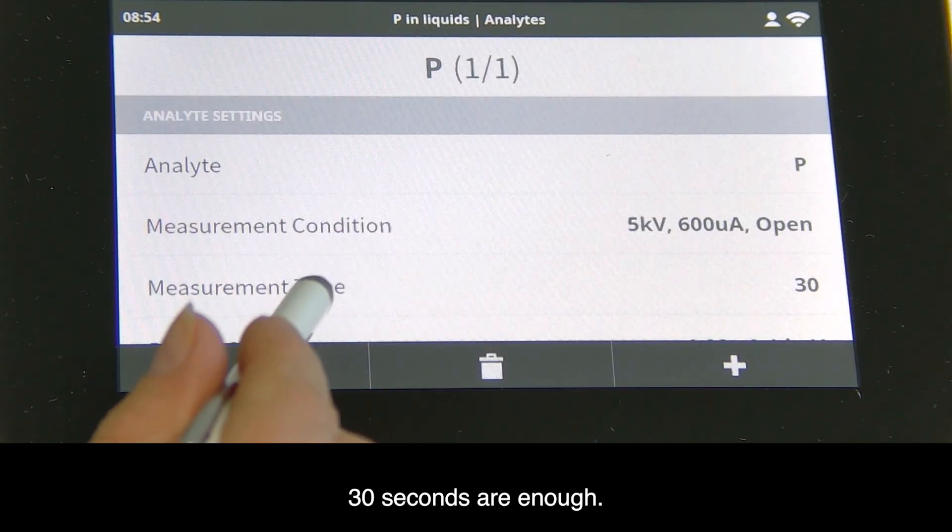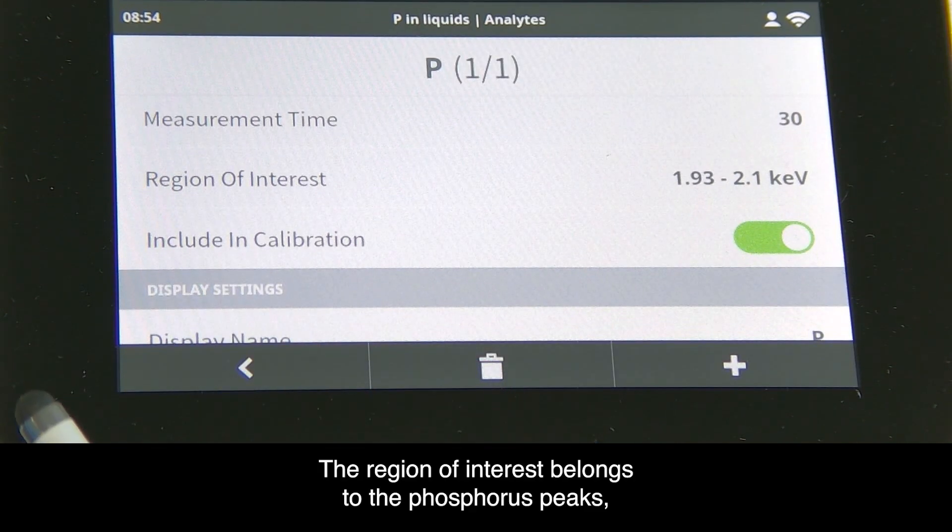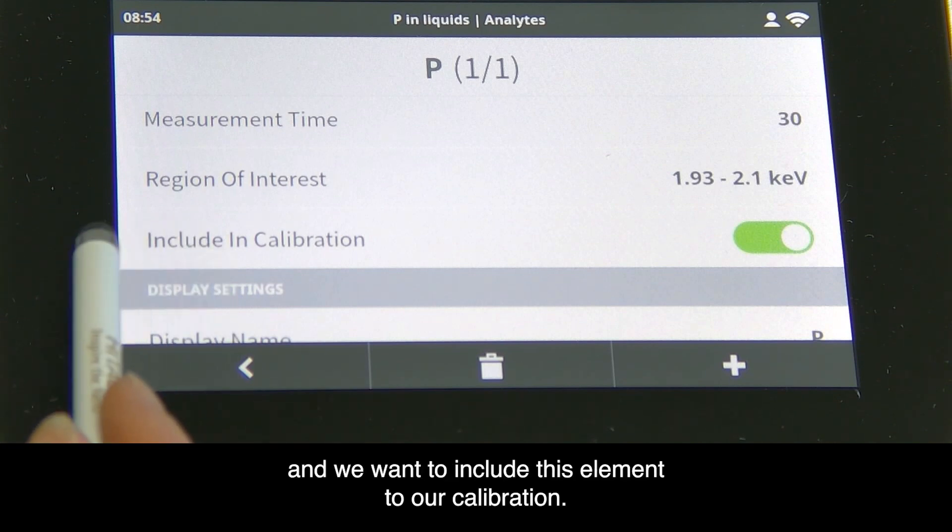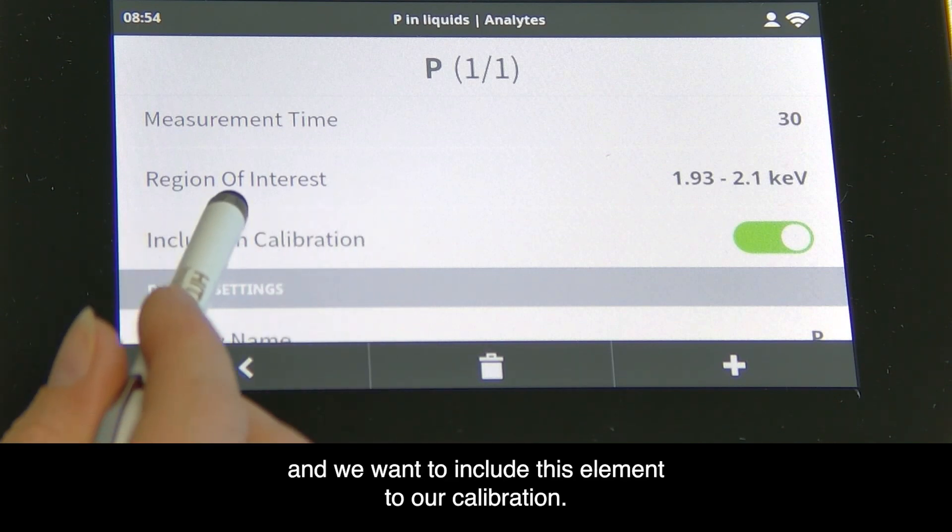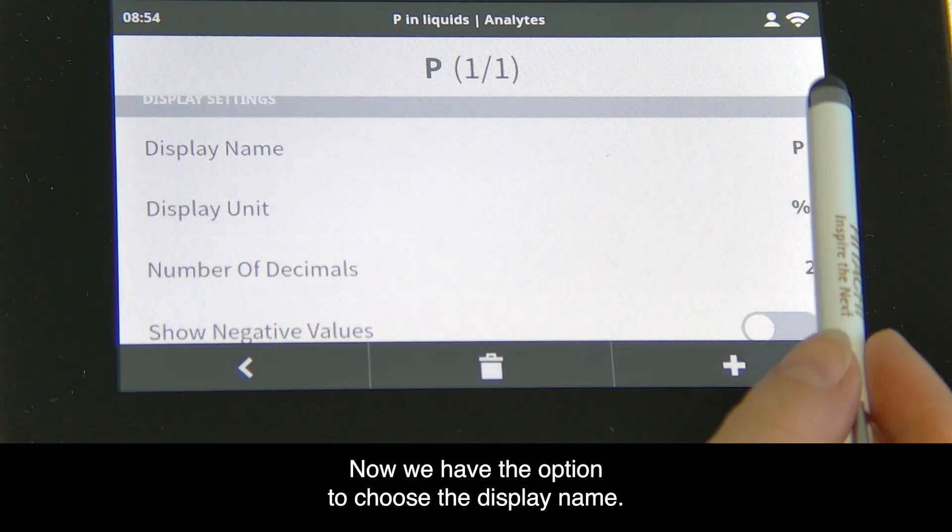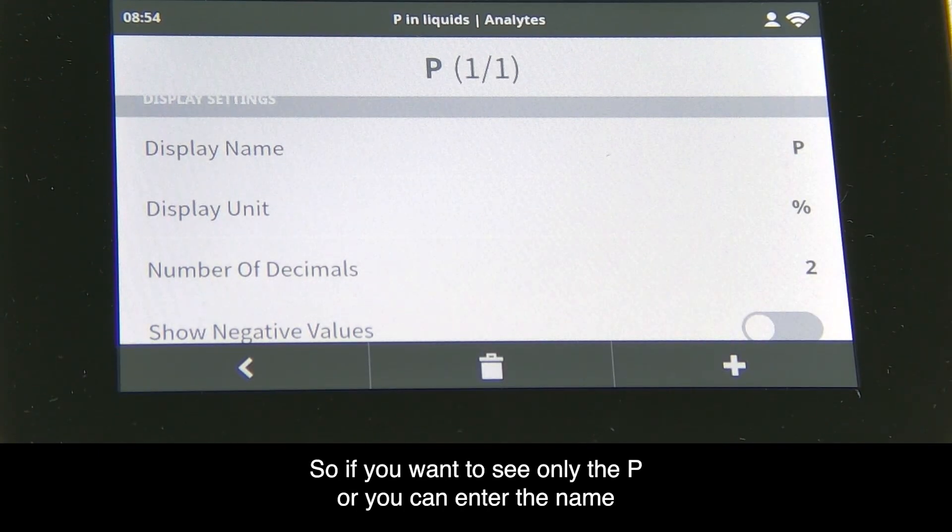The region of interest belongs to the phosphorus peaks, and we want to include this element in our calibration. Now we have the option to choose the display name.